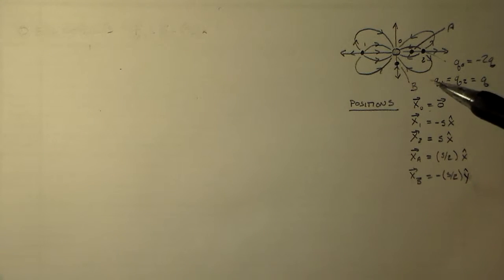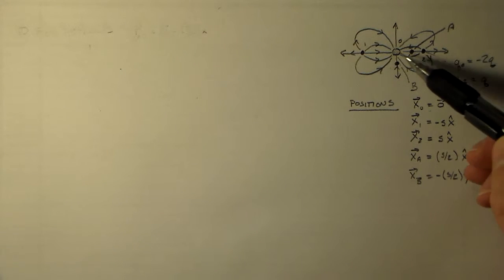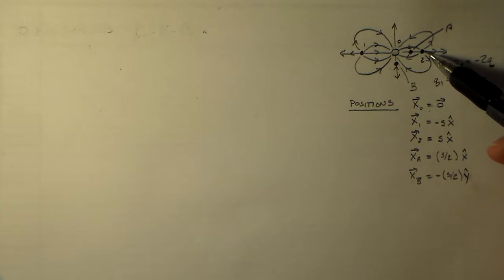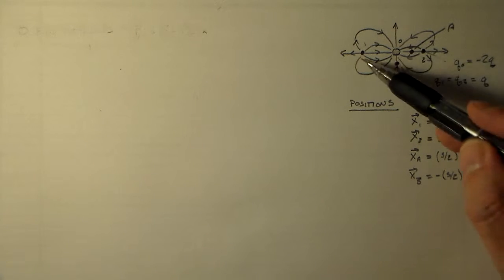Okay, so I'd just like to start off where the last video ended. I have three charges here: 0, 1, and 2. 1 and 2 at the ends have half the charge of 0 and they have opposite signs.